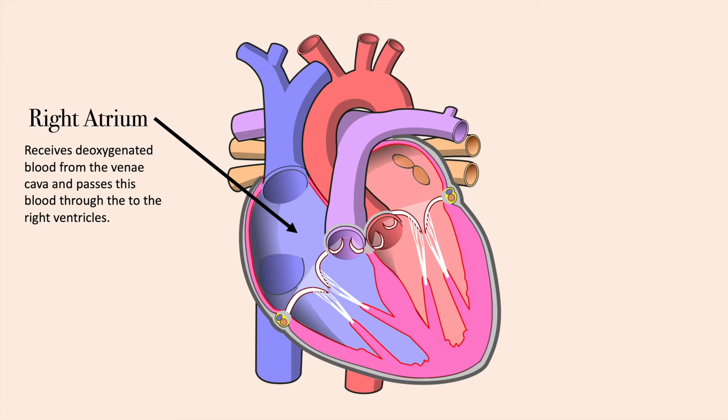The right atrium receives deoxygenated blood from the vena cava and passes this blood through to the right ventricle, which is seen below.